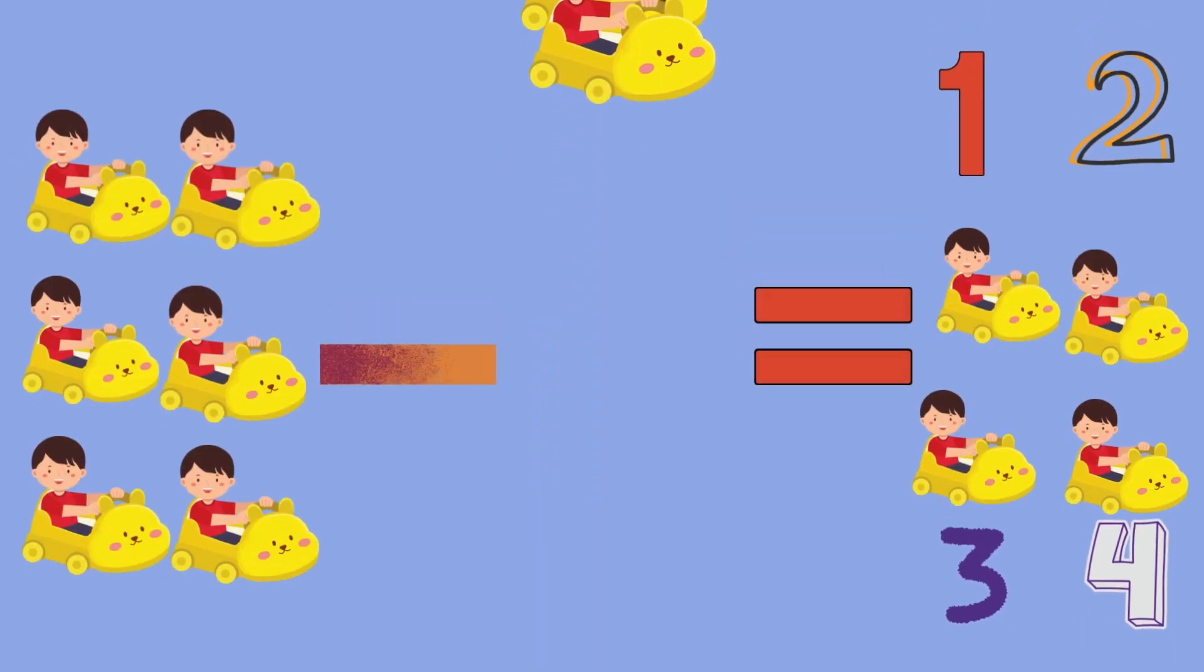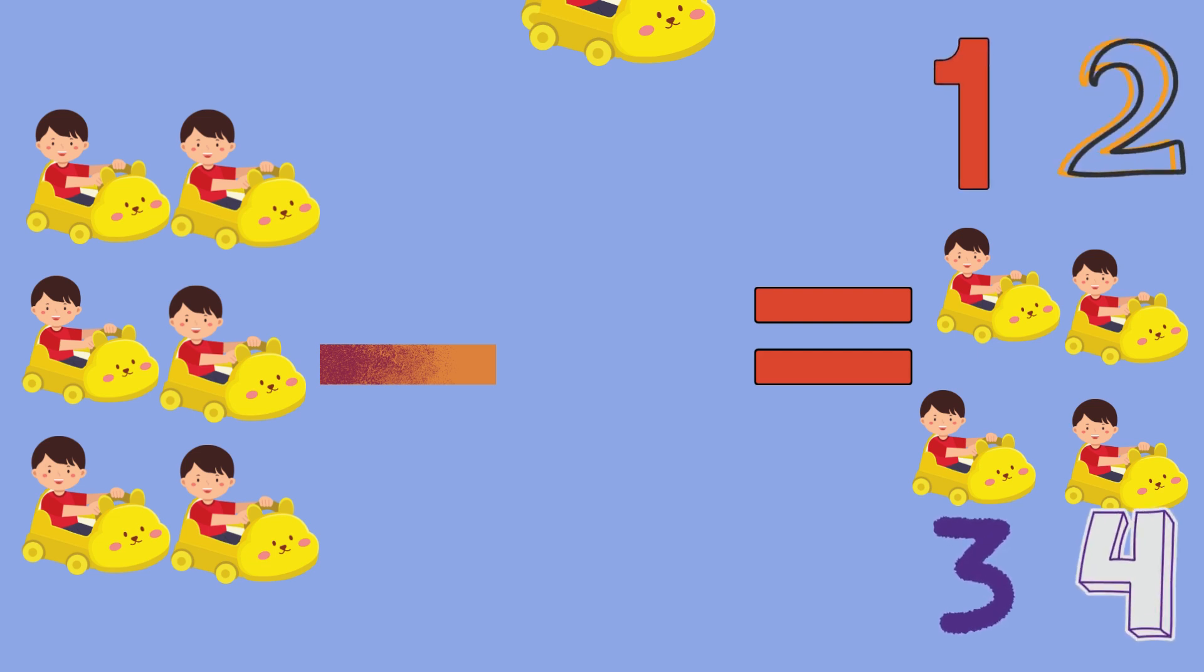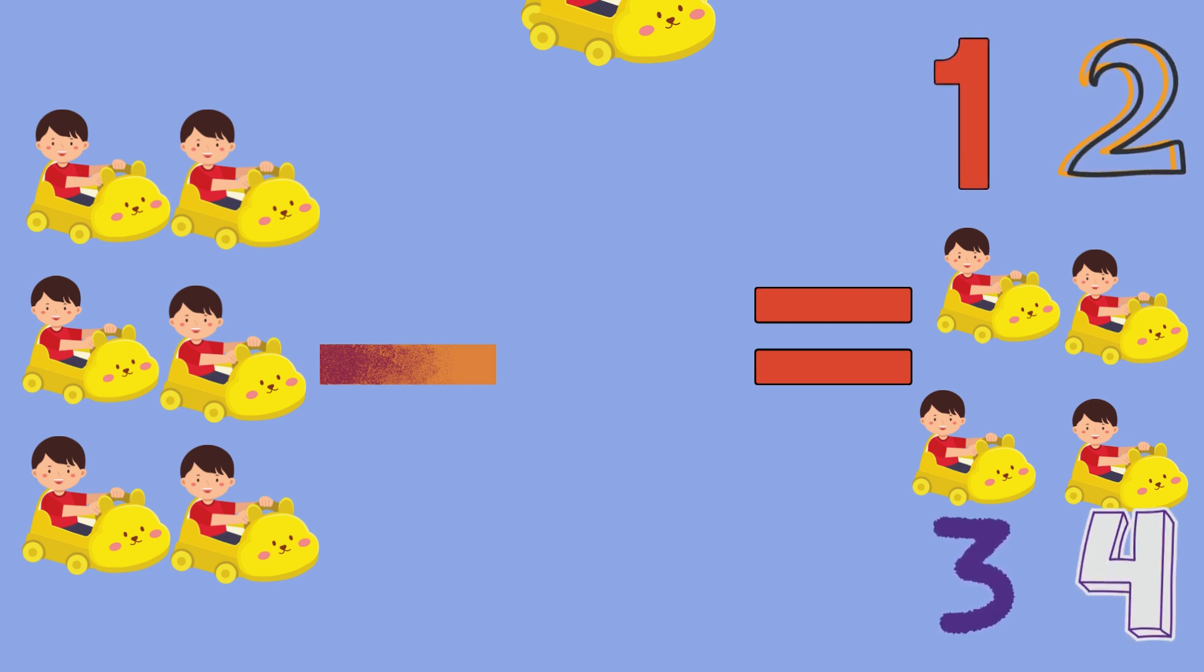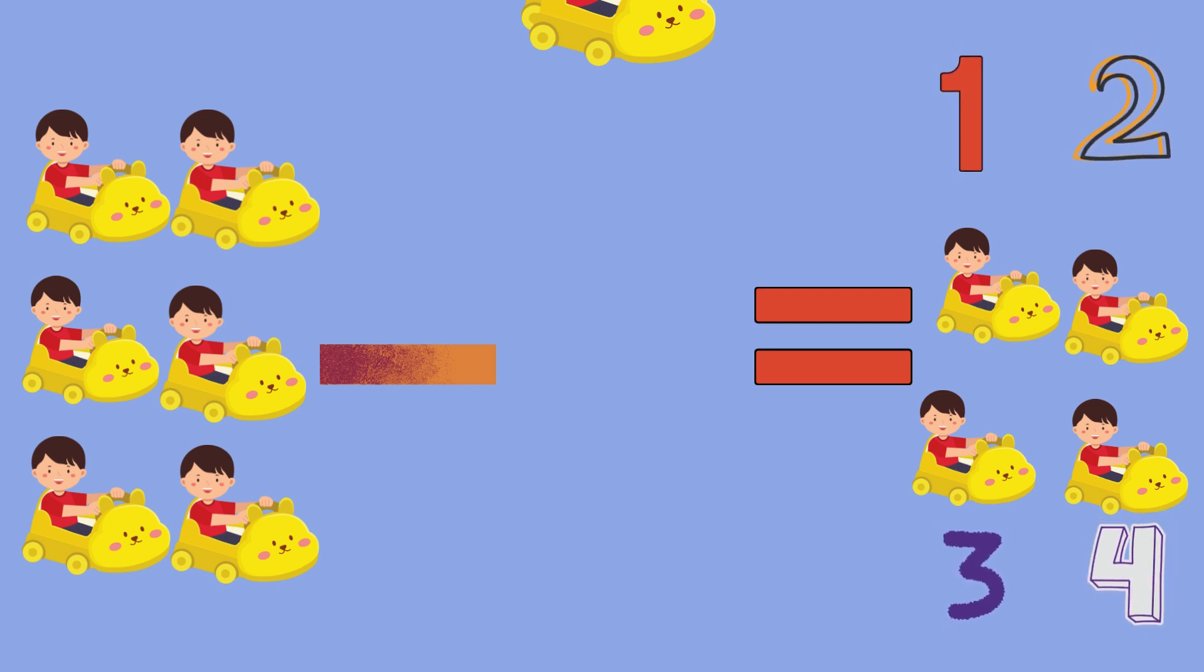The minus sign is our magic symbol that means take away or subtract. Let's try another one. I have six toy cars but I give two cars to my little brother. Let's count what I have left. One, two, three, four. So six minus two equals four.